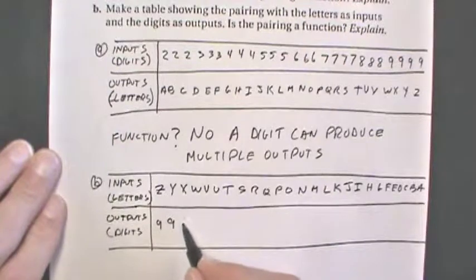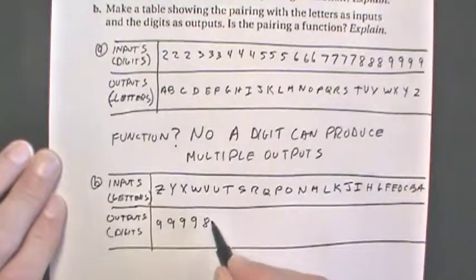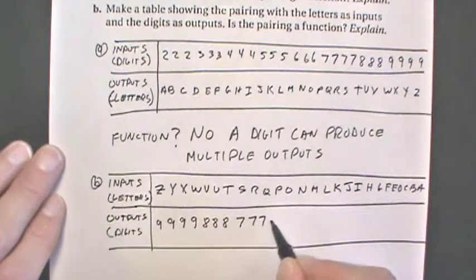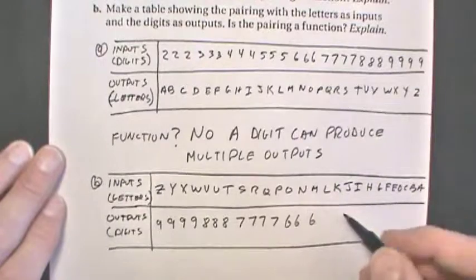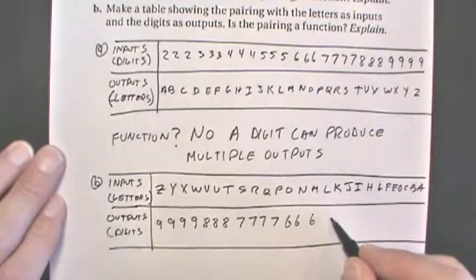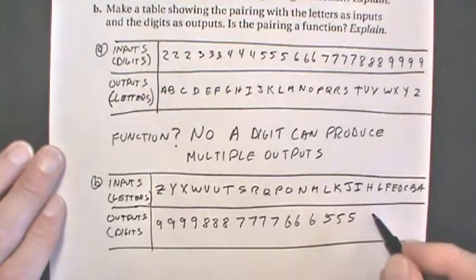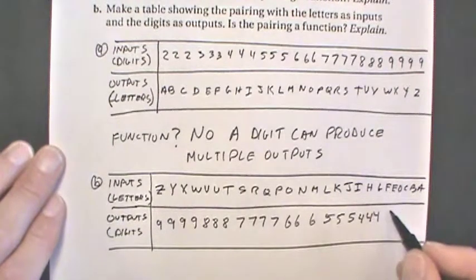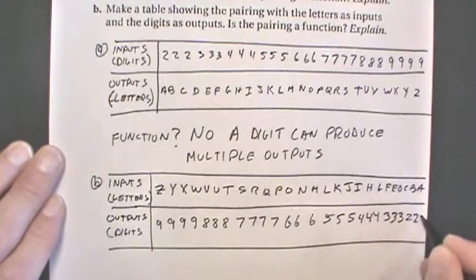So Y will give us a 9, X can give us a 9, W can give us a 9, V, U, and T can give us an 8, S, R, Q, P can give us a 7, O, N, and M can give us a 6, L, K, and J can give us a 5, I can give us a 4, H a 4, and G a 4, F will be a 3, E is a 3, D is a 3, C can give us a 2, B a 2, and A a 2.